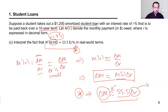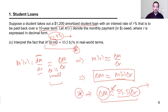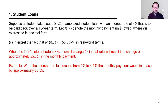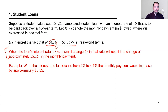We assume delta R is small. If you take out a 4% loan and the next morning rates jump to 25%, that's not a small change and we wouldn't expect this approximation to be accurate. When the loan's interest rate is 4%, a small change delta R results in a change of approximately 55.5 delta R in the monthly payment.